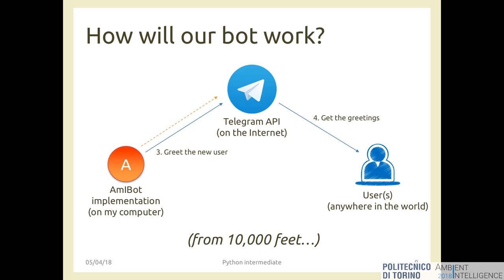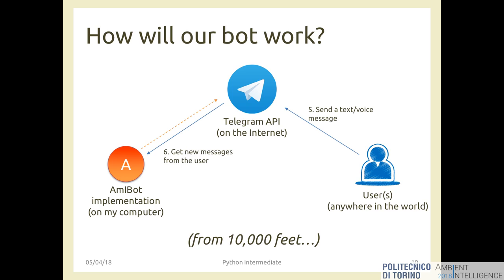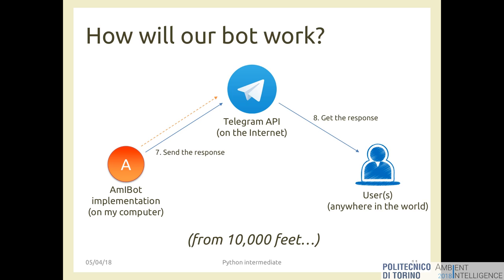When a user starts the conversation with MEI bot, after a brief time the bot will get the start command from the user, prepare the answer, greet the user, and send the response to Telegram, which forwards it to the right user. If the user sends a text or voice message, the MEI bot continues to periodically ask Telegram for updates, gets the new message, interprets it, and sends the response back.